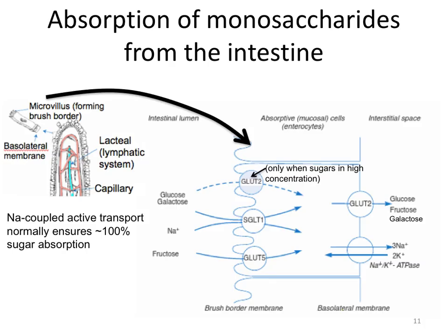There are several sugar transporters on the brush border or luminal surface of the intestinal enterocytes. Together they ensure that essentially 100% of monosaccharides in the small intestine end up being absorbed into the enterocytes. These monosaccharides then largely exit on the basolateral membrane through the GLUT2 transporter, on their way to the portal venous system that goes to the liver.